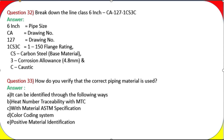Question 33: How do you verify that the correct piping material is used? Answer: It can be identified through the following ways: (a) heat number traceability with MTC, (b) material ASTM specification, (c) color coding system, (d) positive material identification (PMI).